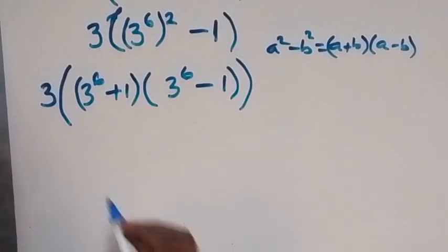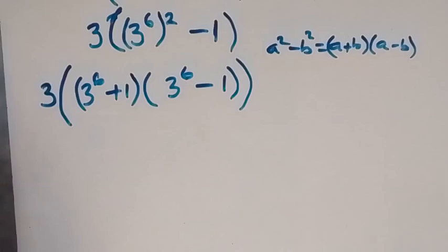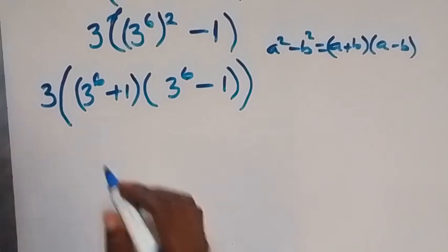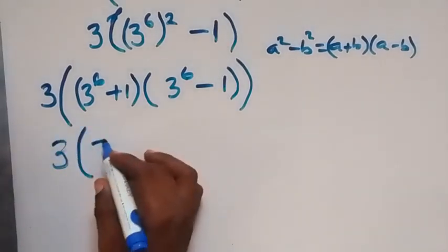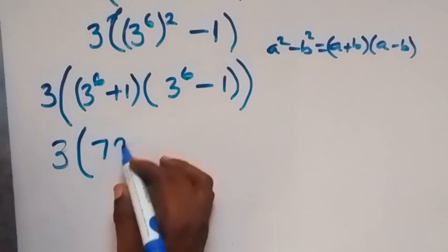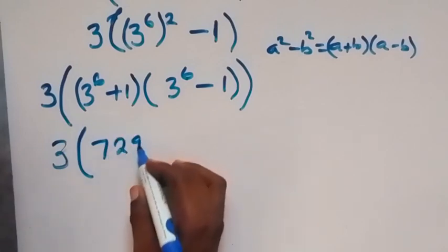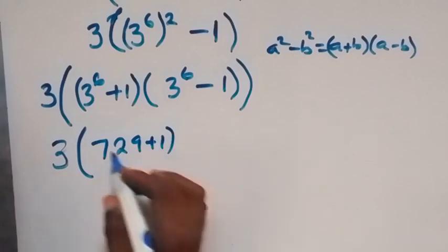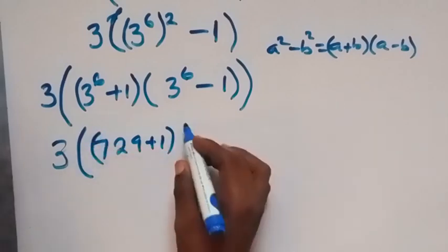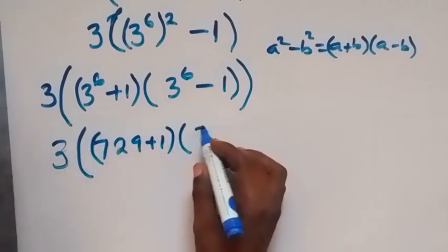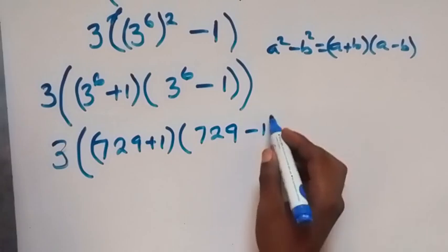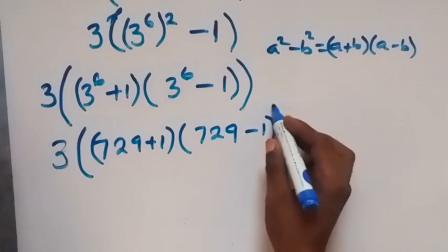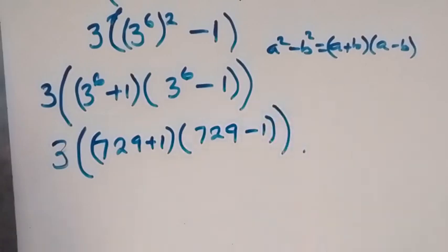From here, 3 raised to power 6 is the same as 729. So we have 3 into bracket 729 plus 1, then multiply by 729 minus 1, then close the bracket.